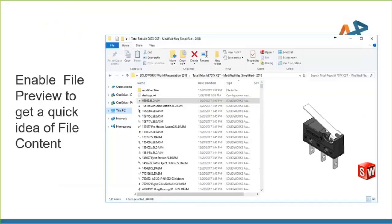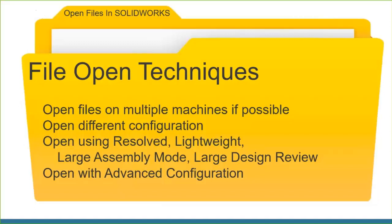Now let's move to getting the file open in SOLIDWORKS. The first thing I always recommend: try opening the assembly on another machine. That tells you whether the problem is machine-specific or file-specific. If it doesn't open on a co-worker's machine either, the problem is likely in the file itself, not your computer settings.